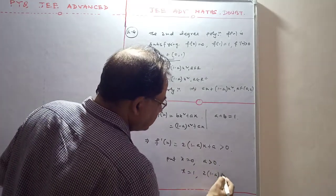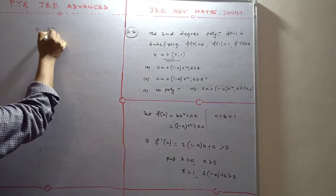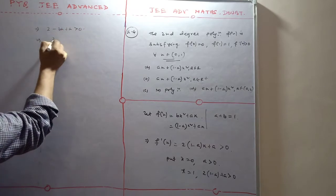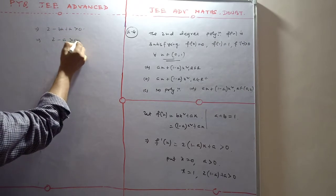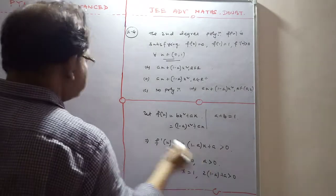At x = 0, we get 2(1-a) + a is positive, so 2 - 2a + a is positive. This gives 2 - a is positive, therefore a is less than 2.